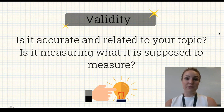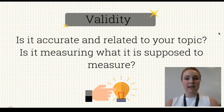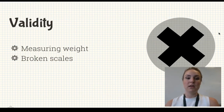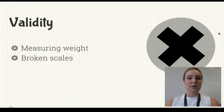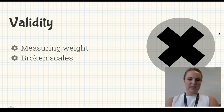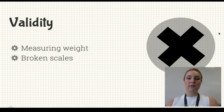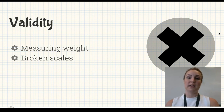Validity commonly gets confused with reliability, but it's very different. This is about whether your source is accurate and related to your topic — and ideally, is it measuring what it is designed or supposed to measure. For example, if you're using scales that are 70 years old, within the same day they might say you're 60, 65, then 70 kilos. You know you can't have changed that much, so even though they're designed to measure weight, they're doing it incorrectly — that's not a valid result.